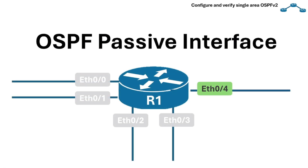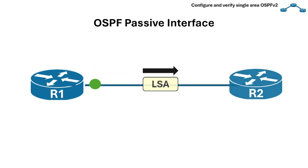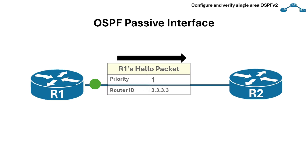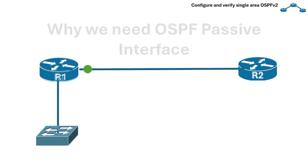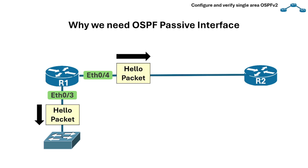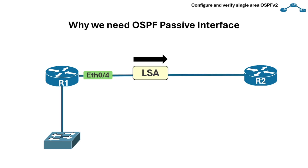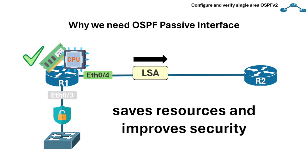Let's now discuss the OSPF passive interface, which is a feature very commonly used in real-world deployments. Normally, when you enable OSPF on an interface, it advertises the subnet so other routers learn about it, and it also sends hello packets trying to form neighbor relationships. But not every interface has another router connected, so this is where passive interface comes in. Without passive interface, the router wastes resources sending hello packets where no router exists. With passive interface, the subnet is still advertised into OSPF, but no hellos are sent or received — this saves resources, improves security, and prevents end hosts from seeing OSPF packets.